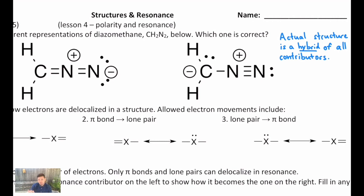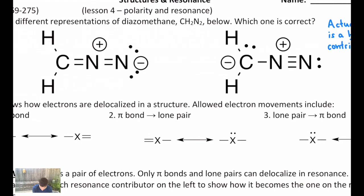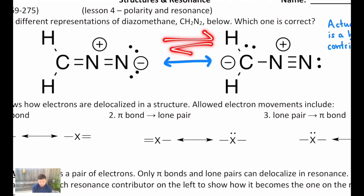We normally think of electrons in pairs as capable of being shared by two atoms, but the key to resonance is that they might be shared among more than two atoms. They are delocalized among more than two atoms in a molecule, and we represent that by showing a double-headed arrow between multiple contributors. This is not an equilibrium arrow, and not a double reversible reaction arrow, because these are not interconverting — they're different representations of one thing.